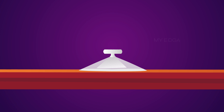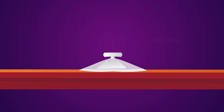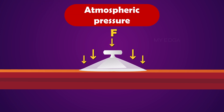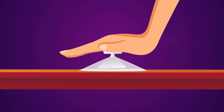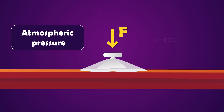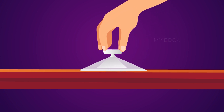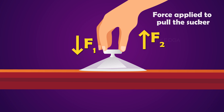Here we have a rubber sucker. When we press it hard on a smooth surface, it will stick on the surface. How is it so? We didn't apply any adhesives on it. This is because of atmospheric pressure. Most of the air between the rubber sucker and the surface will escape when we press the sucker, and the air outside the sucker will exert pressure on it — that is the pressure of the atmosphere. Now try to pull it off the surface. We cannot do it easily. To pull the sucker off the surface, we have to apply a force large enough to overcome the atmospheric pressure.